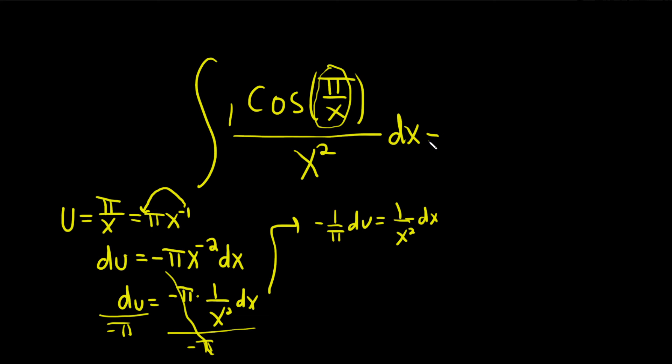Let's make the substitution now. So we can replace that with negative 1 over pi. Let's pull it out. And then du. Now we're left with cosine. And then we said the inside of cosine was u, so pi over x is u.